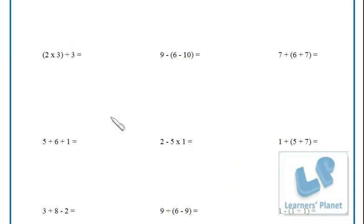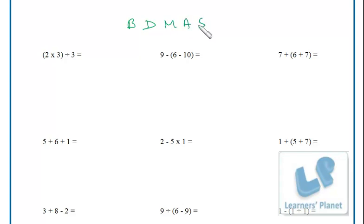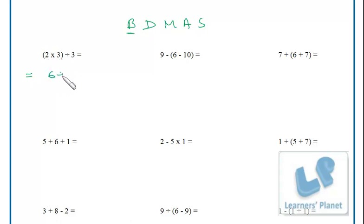Now let's look at problems where brackets are used. The correct order is: Bracket, Division, Multiplication, Addition, and Subtraction. First, we solve the bracket. You can see a small bracket — a round bracket — here. Inside: 2 × 3 = 6, then 6 ÷ 3 = 2.